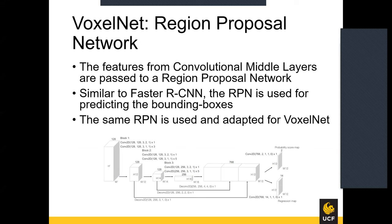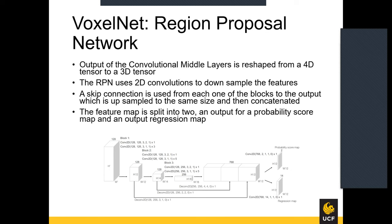After the convolutional middle layers, the features are passed to a region proposal network, which predicts bounding boxes. A popular use of this architecture was for 2D object detection with Faster R-CNN, and that same region proposal network is adapted for VoxelNet. Prior to the RPN, features are reshaped into a 3D tensor. The RPN then uses 2D convolutions to further process the data. Features are downsampled, and skip connections from each block are upsampled to the same size and concatenated. The output is split into a regression map for bounding boxes and a probability score map for detecting whether an object is present.